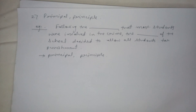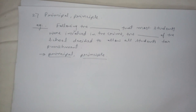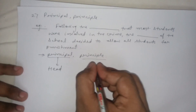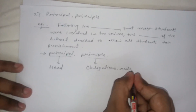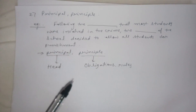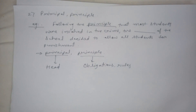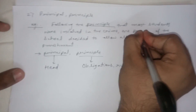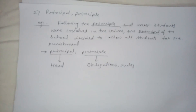The head of the school is called the 'principal', and 'principle' refers to rules or obligations — the guidelines we follow in life. So 'principal' (p-r-i-n-c-i-p-a-l) is the head of the school, and 'principle' (p-r-i-n-c-i-p-l-e) refers to the rules or obligations we follow. The answer: 'Following the principle that most students were involved in the crime, the principal of the school decided to allow all students for punishment.'